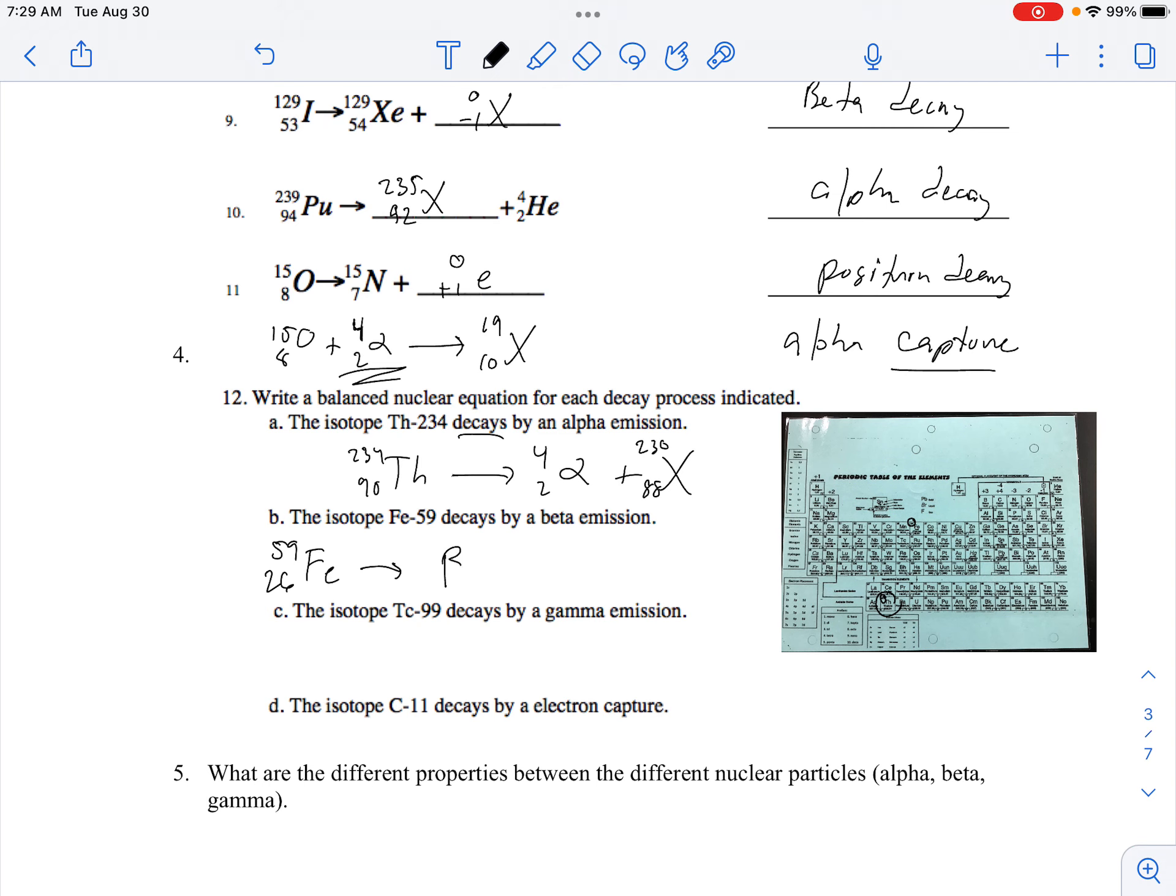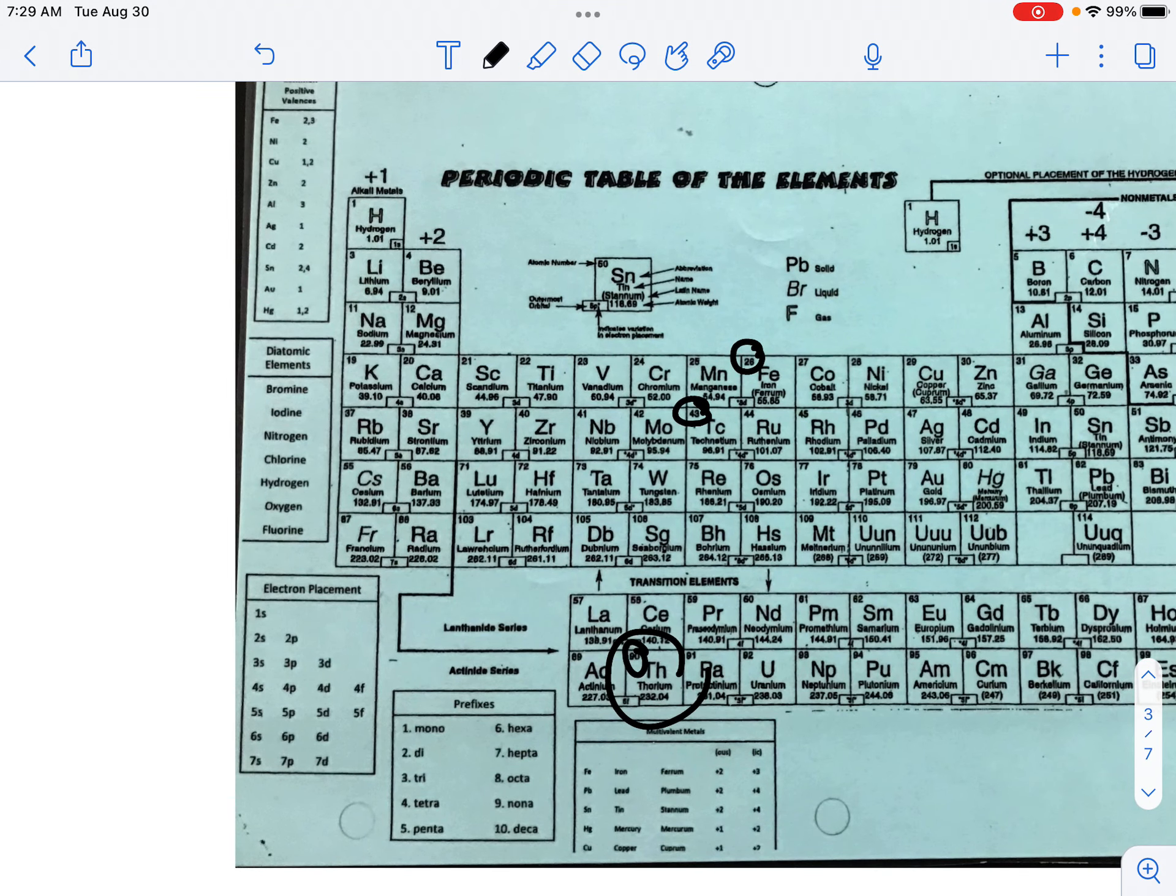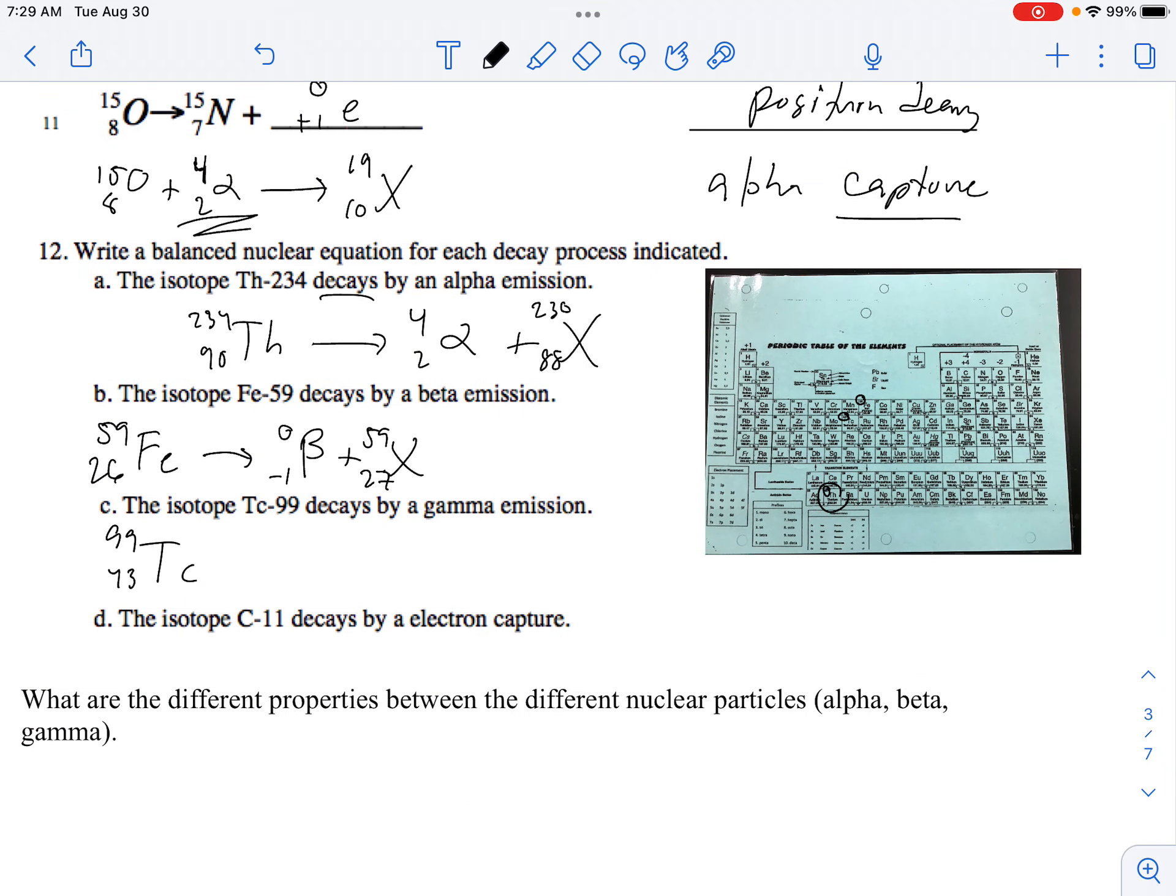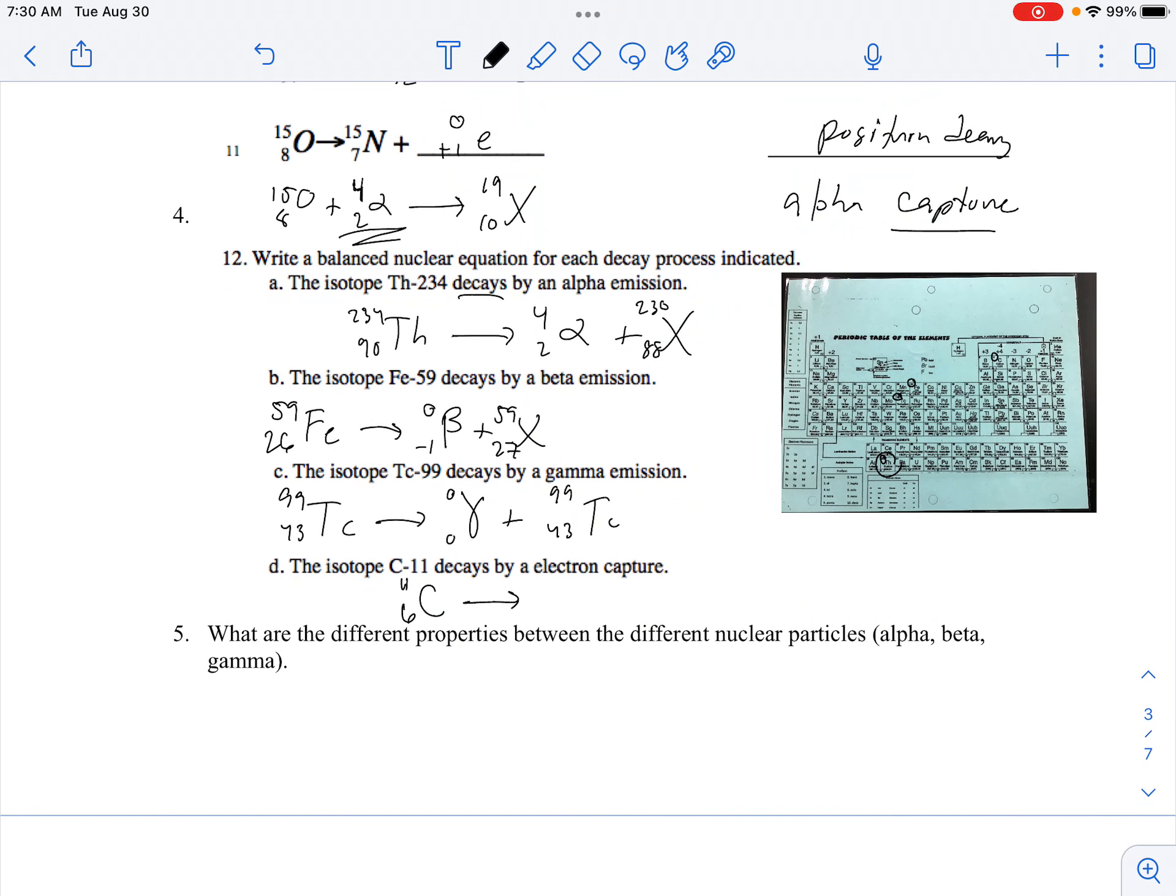Again, it's another decay, beta, so zero negative one. This would be 27 and 59. Technetium-99, technetium right here, 43. Gamma, no change in the mass. Carbon-11, carbon is 6. Electron capture. Notice this one is capture, which means that the electron or the beta particle is in the reactants, to the left of the arrow. 11 and 5.